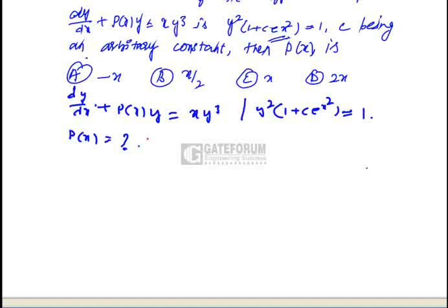In order to find the value of p(x), we first convert the given differential equation into a first-order differential equation. To do this, we divide the given equation by y³, which gives us y^(-3) times dy/dx plus y^(-2) times p(x) equals x.